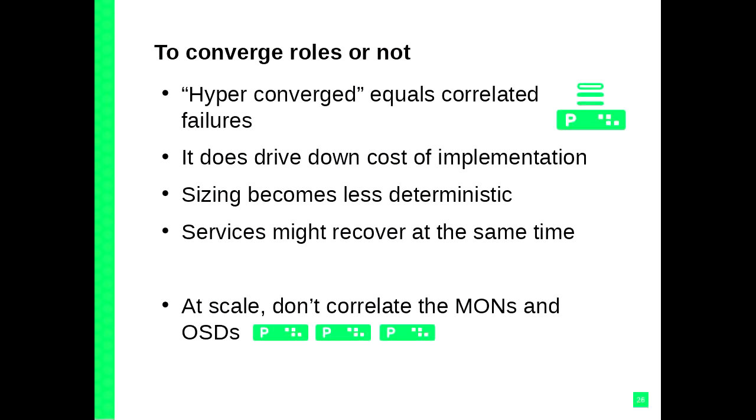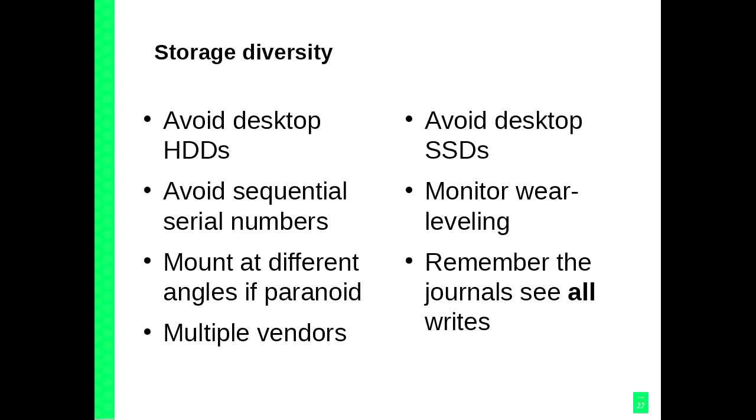Large environments may choose to use five or seven monitors, but I've never seen a customer run more than five or seven because there's just no practical need. Quick thing on hyperconvergence — it's a really great thing, everyone wants to slap everything on the same hardware. But it also means all your components on that piece of hardware fail at the same time. If you have monitors, gateways, OSDs, and part of the workload on the same piece of hardware, the recovery will take longer because all those different layers have to recover at the exact same time. In general, we recommend you don't correlate the monitors with other nodes.